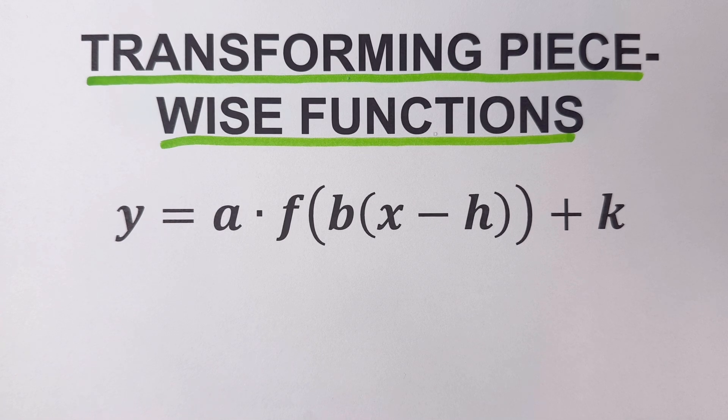If y equals f(x) is a function, then the equation in graphing form for transformations can be written as y equals a times f of b(x minus h) plus k, where a, b, h, and k are parameters.